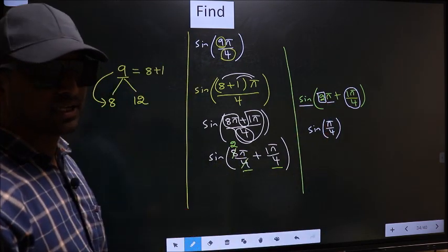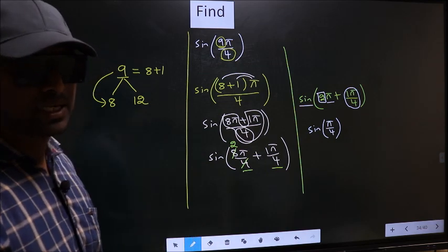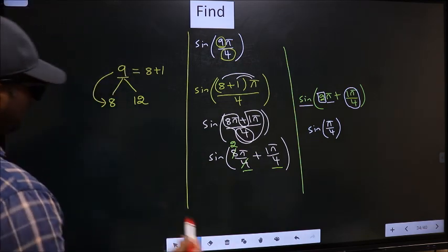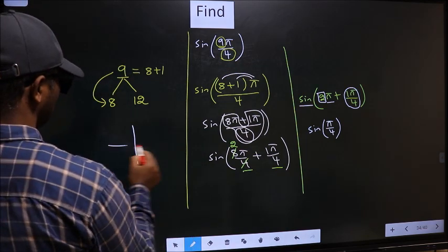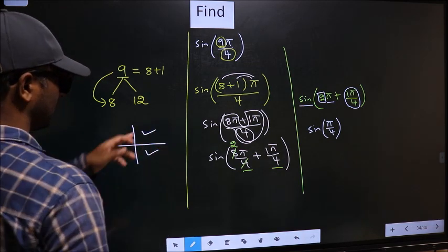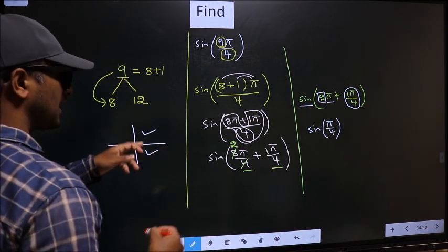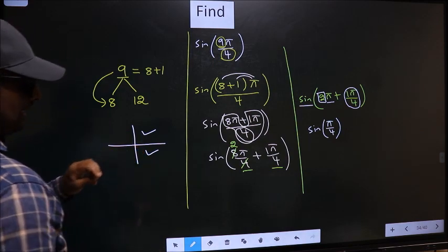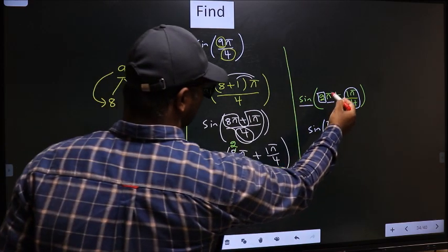2 is even. And, all the even multiples of π, they lie in 1st or 4th quadrant. Now, to decide in which quadrant do they lie, we should look at this symbol.